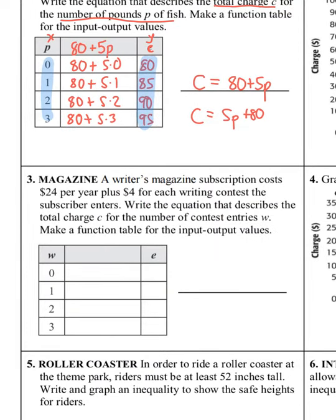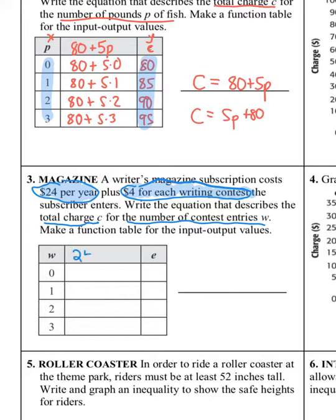Let's see how you did. Number three says: a writer's magazine subscription costs $24 per year plus $4 for each writing contest the subscriber enters. Write the equation that describes the total charge C for the number of contest entries W, and make a function table. This $24 per year you have to pay whether or not you enter any writing contest, and you add $4 for each contest you enter.